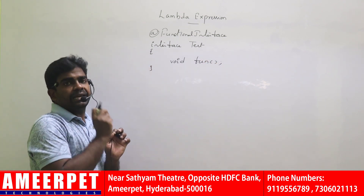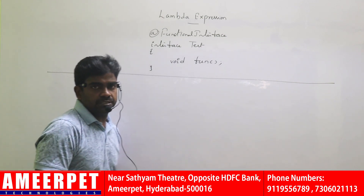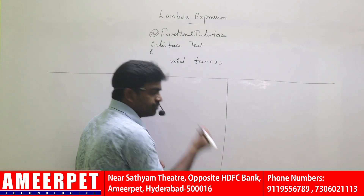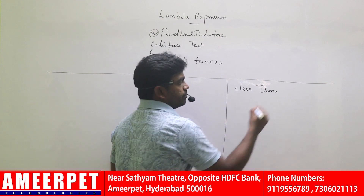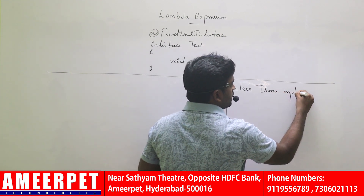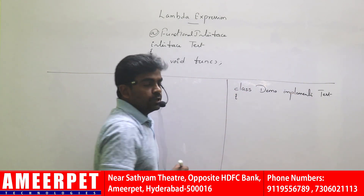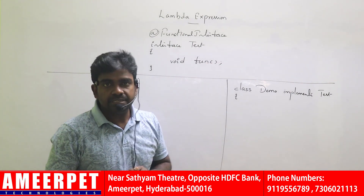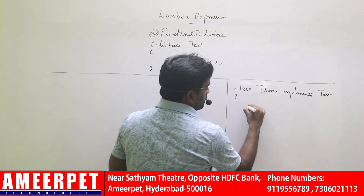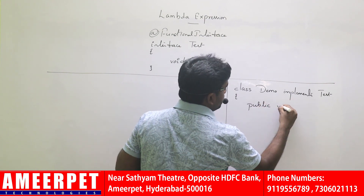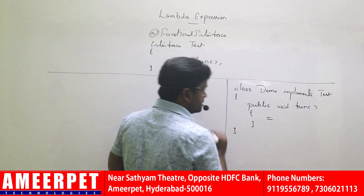In how many ways can we implement this functional interface? The most common way is: we take one class — let's call it Demo — which implements the Test interface. We know that if any class is implementing from an interface, it has to override the abstract method. By default it is public, so we define public void fun() and write any logic inside.